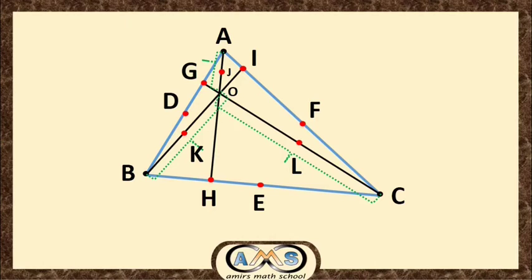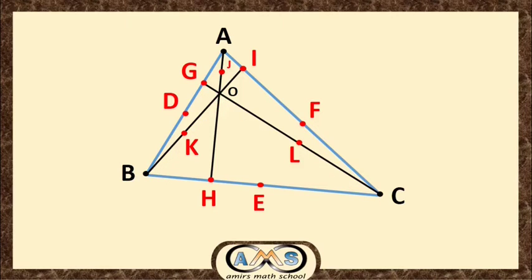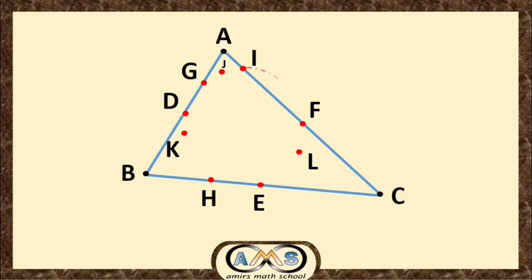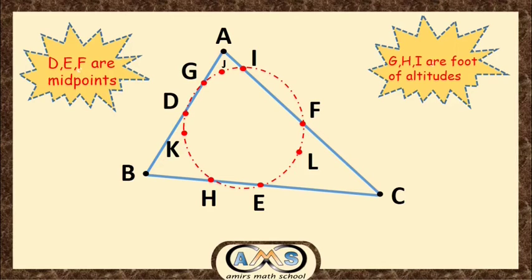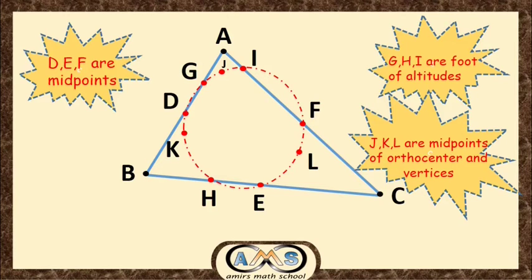These nine points lie on the circumference of the 9-point circle. If we join these nine points with a best-fit curve, that will be our 9-point circle. This is our 9-point circle. Within this 9-point circle, the nine points are D, E, F — which are the midpoints of the sides; G, H, I — which are the feet of the altitudes; and J, K, L — which are the midpoints of the orthocenter and the vertices.